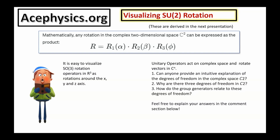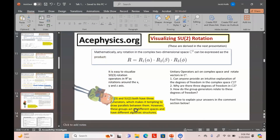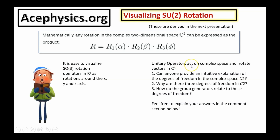Visualizing SU2 rotations can be difficult because they involve complex numbers — it's easy to visualize SO3 rotations in R3, but unitary operators involve complex numbers and higher dimensions. Unitary operators act on complex space and rotate vectors in CN. Can anyone watching provide an intuitive explanation of the degrees of freedom in complex space C2? Why are there 3 degrees of freedom in C2, and how do the group generators relate to them? These are the types of questions physics students should be thinking about to gain insight into quantum mechanics.